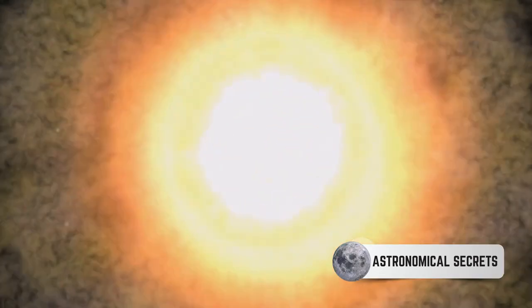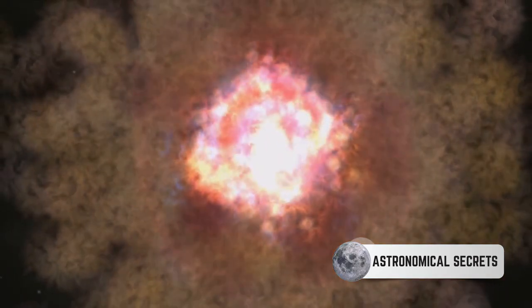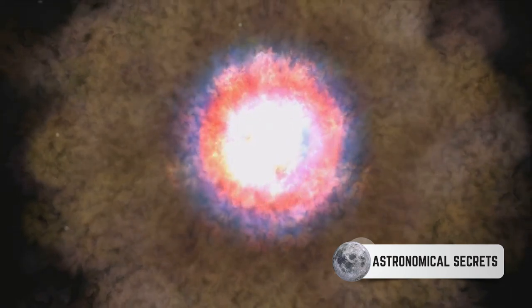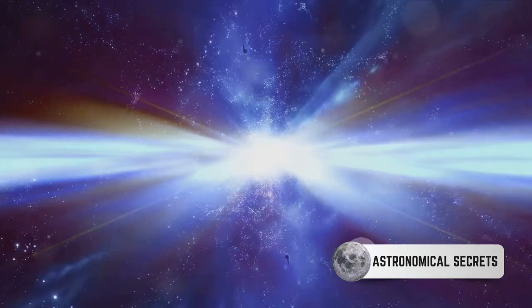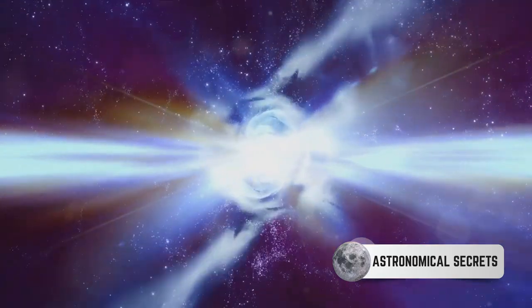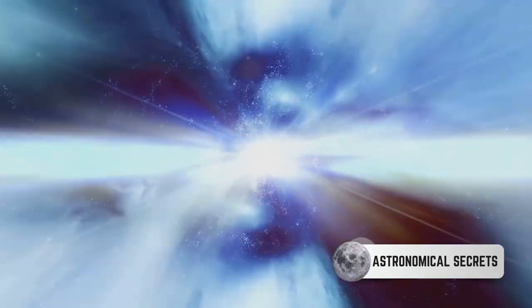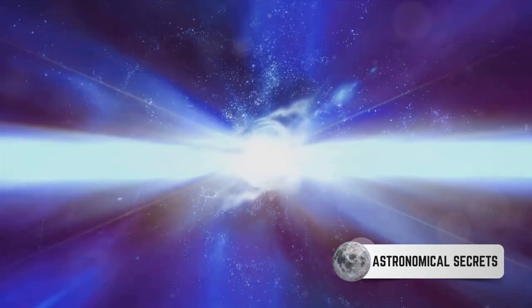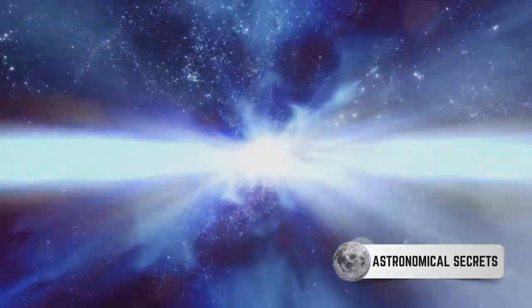You see, when a Type 1a supernova explodes, it shines with a peak luminosity that's roughly 5 billion times the brightness of our sun. That's a lot of light. And because this peak brightness is consistent from one Type 1a supernova to the next, astronomers can use it as a gauge.